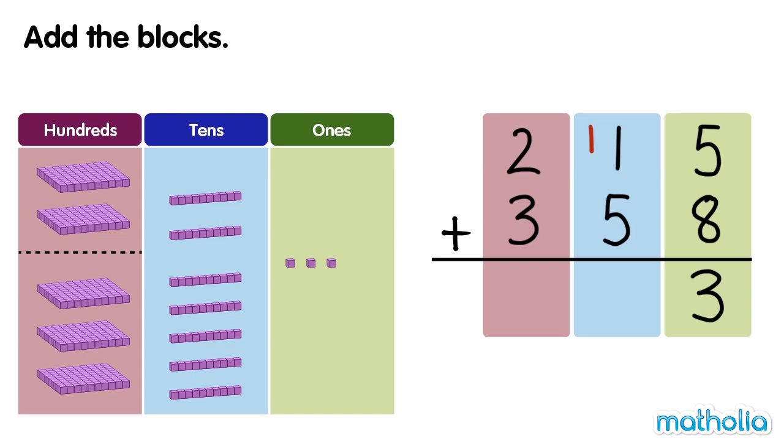Next we add the tens. 1 ten plus 1 ten plus 5 tens equals 7 tens. Now we add the hundreds. 2 hundreds plus 3 hundreds equals 5 hundreds.